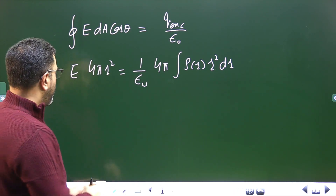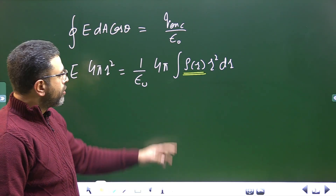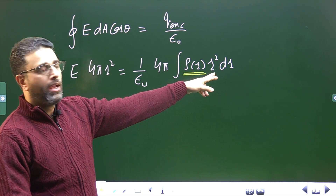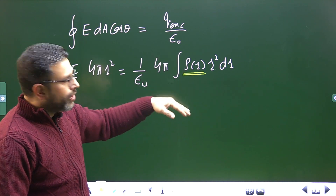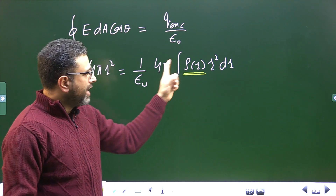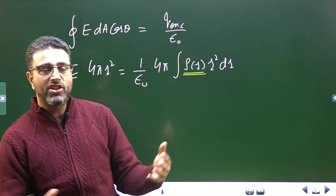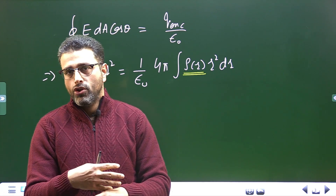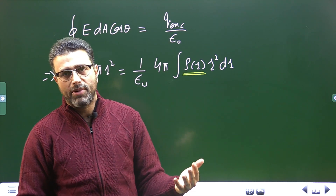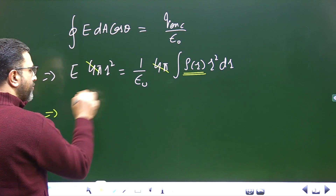We need to find ρ(r), but it is inside the integral. To extract it, I'll differentiate both sides of the equation with respect to r. Since differentiation and integration are reverse processes, they cancel out, and the 4π on both sides also cancels. So differentiating both sides with respect to r gives: d/dr [E · r²] = (1/ε₀) ρ(r) r².